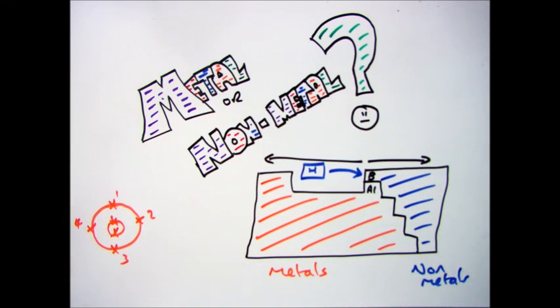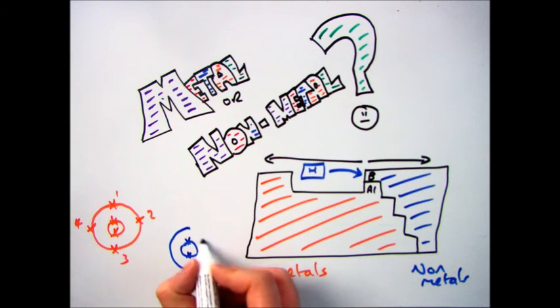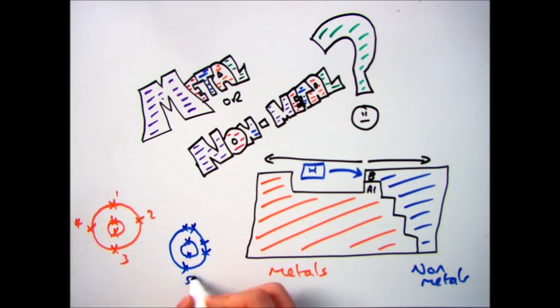So if you have one, two, three or four electrons in the outer shell it's usually a metal and five, six, seven, eight is usually a non-metal. It's not always the case but it's the general rule.